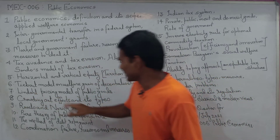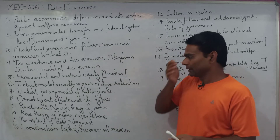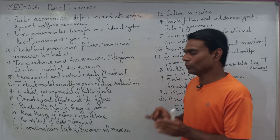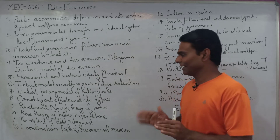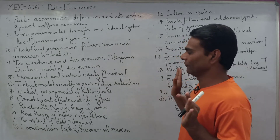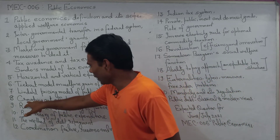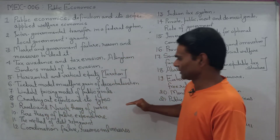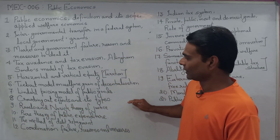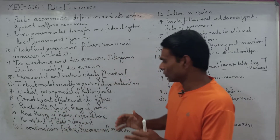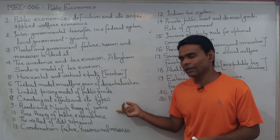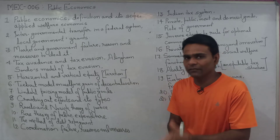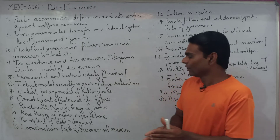The Lindahl pricing model of public goods. These two models are repeated questions. Crowding-out effects and its tax implications. Rawls and Nozick's theory of justice — this is a 12-mark and 20-mark question with differences highlighted.